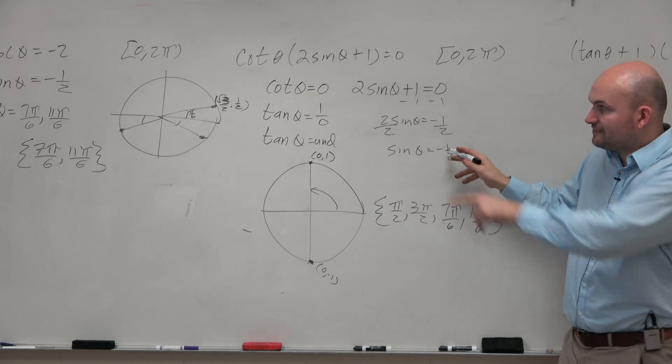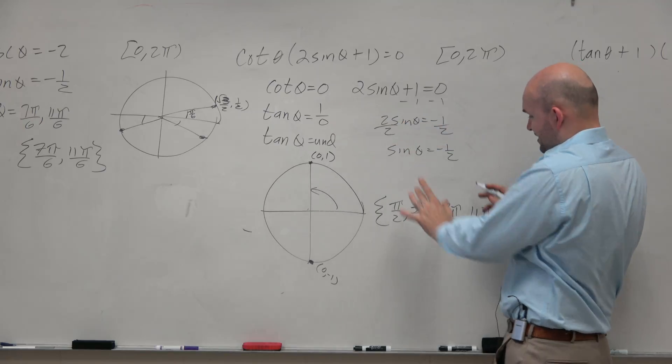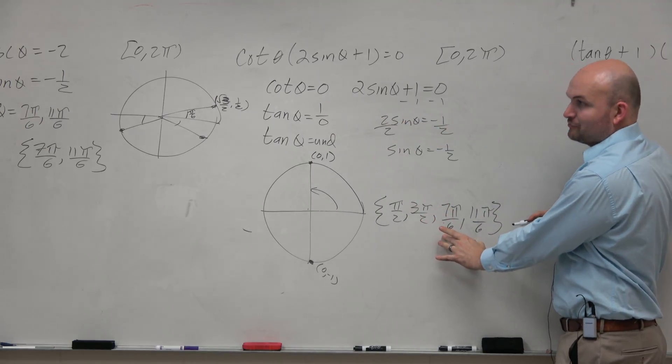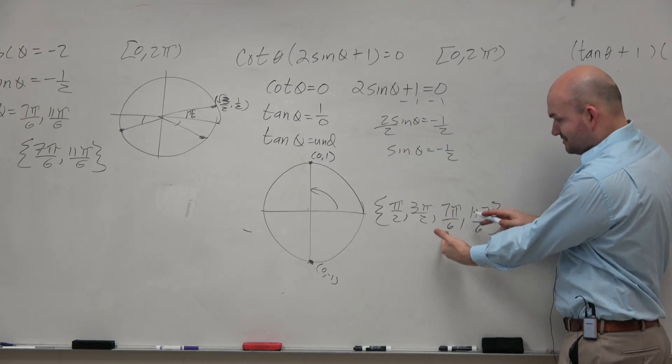So sine of theta equals negative 1 half. That's the same question I really answered over there, so I just wrote the answers. I'm not going to re-explain how to get those again, right? It's the same answers.